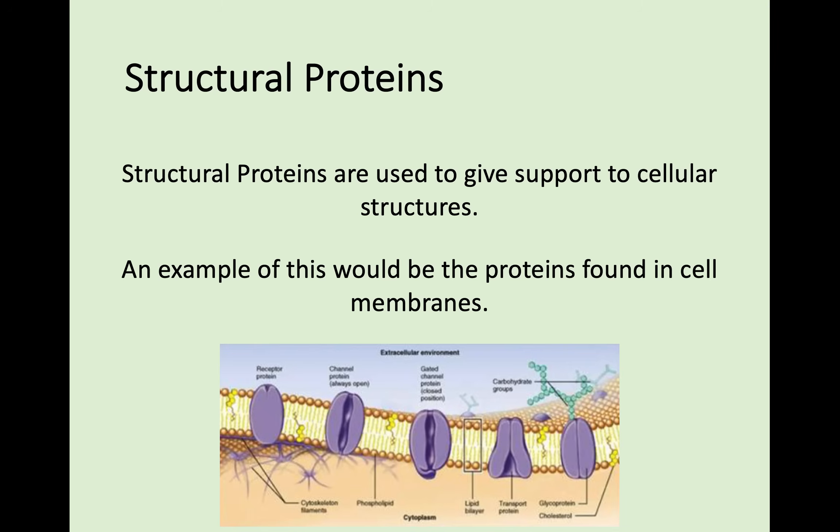To start off with, structural proteins. They're used to give support to cell structures. A good example of this that we've already looked at are the proteins found in the cell membrane. These are really useful — they're required for active transport to take place and for transport across the membrane.